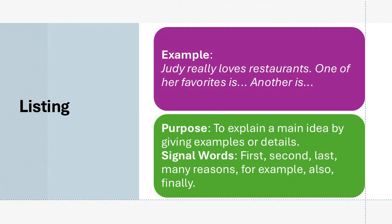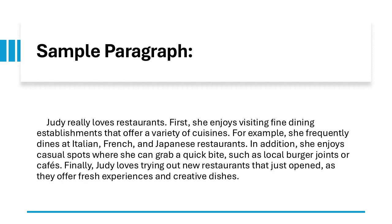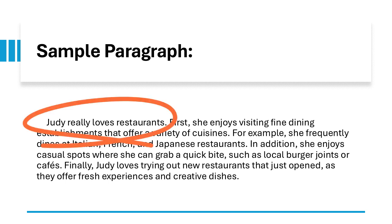Words like first, next, and finally are great signposts for the reader to keep track of where you are in the list. This sample paragraph follows a listing pattern of organization, where multiple points are presented in a clear and orderly sequence. The topic sentence introduces the main idea — Judy's love for restaurants. After that, the paragraph lists three specific types of restaurants she enjoys, in order.